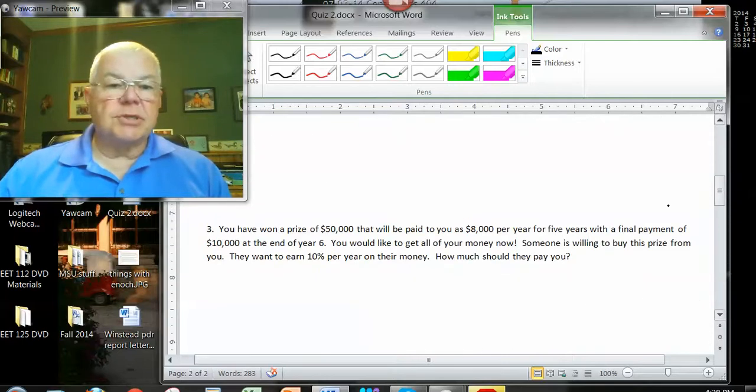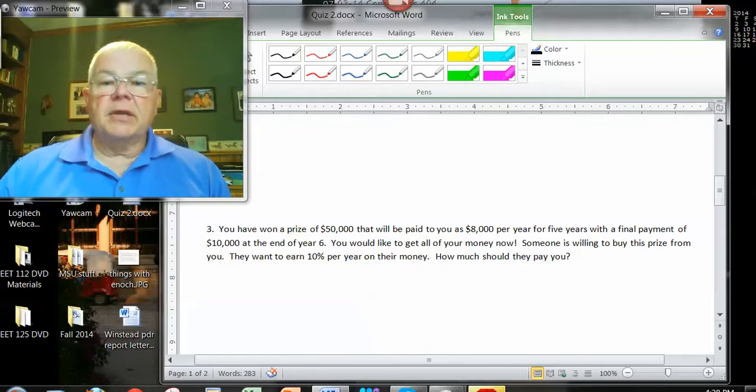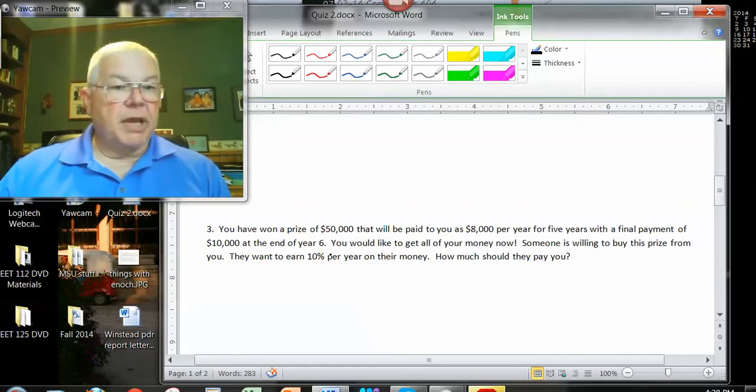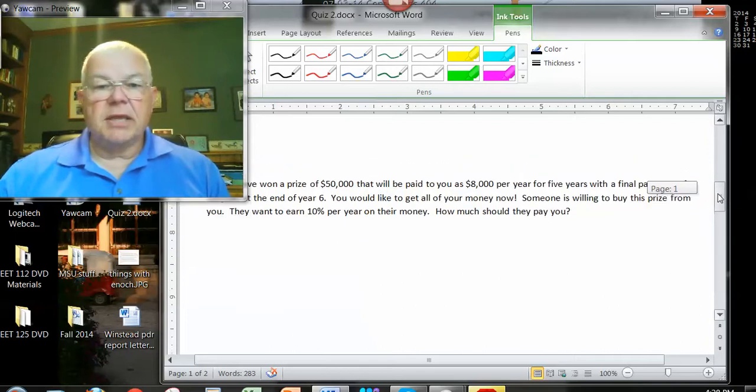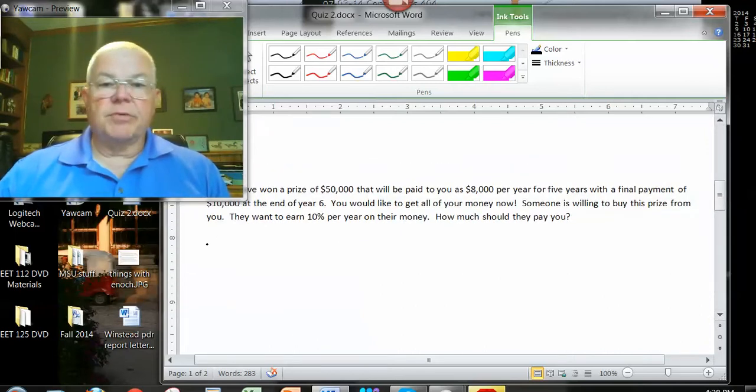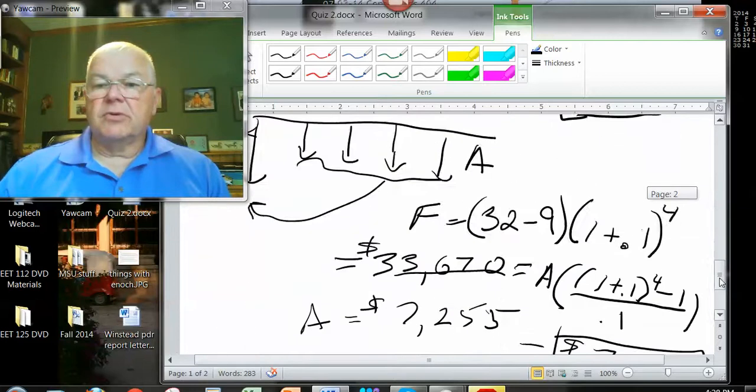The last question, you want a prize of $50,000. They're going to give you $8,000 a year for five years, and at the end of year six, they'll give you $10k. But you want your money now. Someone's willing to buy it from you, but the person who buys it wants to make 10% interest. How much should they pay you? I'll work that one right here.